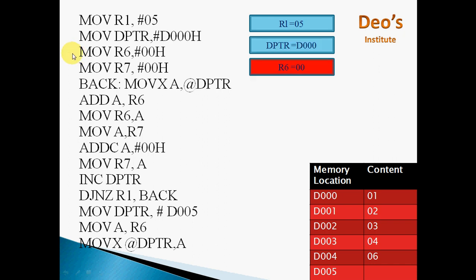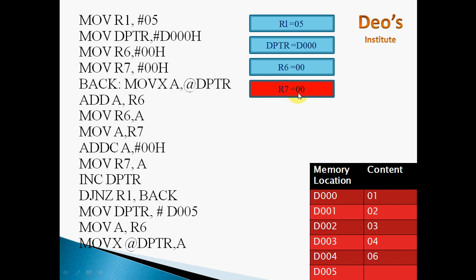The next instruction is MOV R6, #00, so we are initializing register R6 to 00. The next instruction is MOV R7, #00, we are initializing R7 to 00. We are going to store the result in R6 and the carry in R7 register.